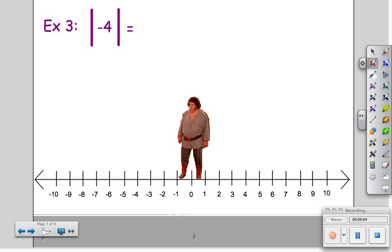Let's try a negative number. The absolute value of negative four, it will take Andre one, two, three, four steps to get from zero to negative four. So the absolute value of negative four is positive four.